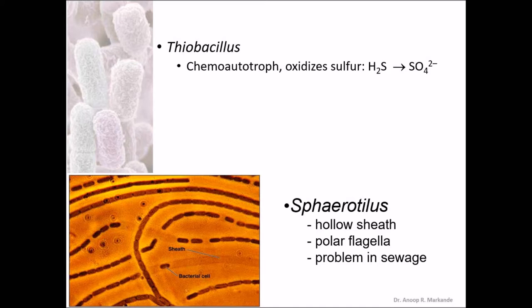Next comes Sphaerotilus. It contains a hollow sheath and has a polar flagellum, which is one of the important factors in this organism. Although it has a hollow sheath, the flagellated organism is present within it. This is one of the major problems in sewage, where they are growing and blocking all the pores of the sewage channels.